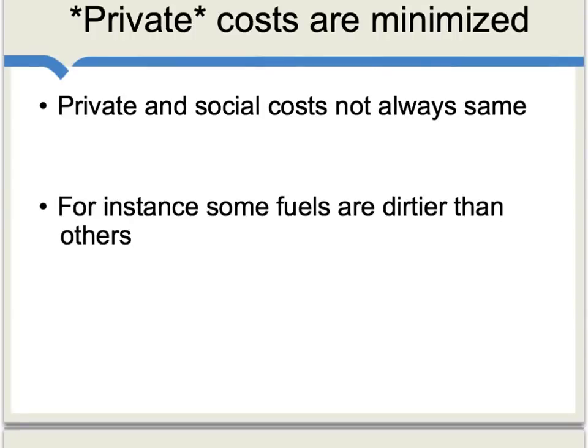Still, we need to be careful here. What the market is minimizing is private costs of production, and private and social costs are not always the same, especially with regard to the environment. For instance, some fuels may be environmentally dirtier than others, but this difference is not always reflected in the price of those fuels.